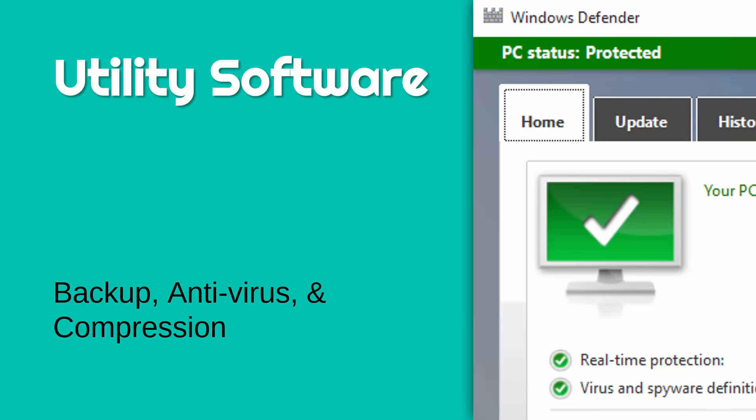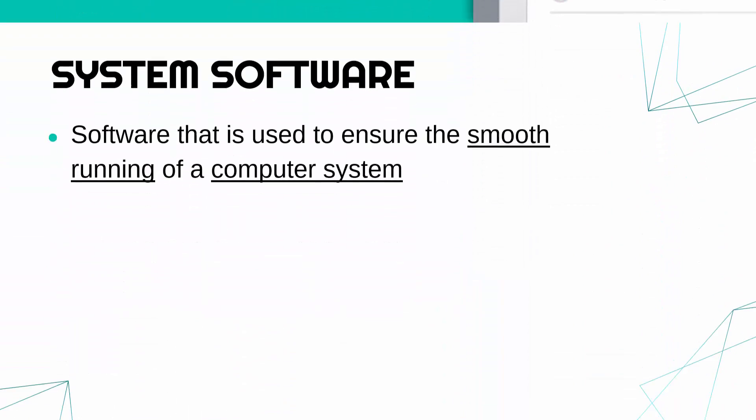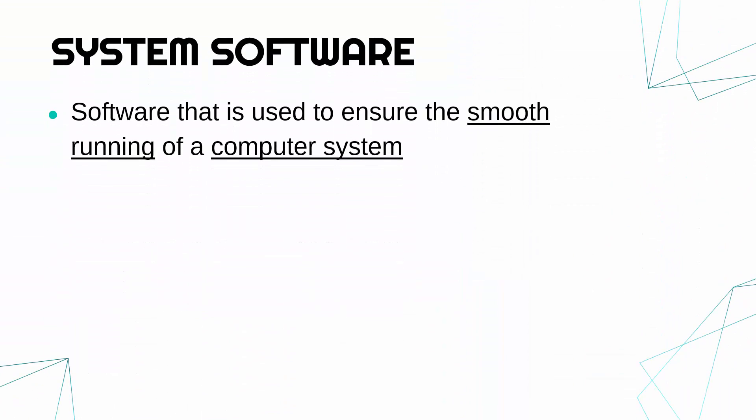Hello, in this video I'm going to go through three types of utility software: backup, antivirus and compression. But before I do, I just want to add another term which you don't necessarily need to know but I think is just useful to have in your mind when you are trying to think about the different concepts in this section of the course.